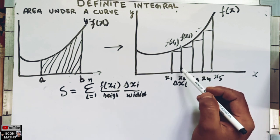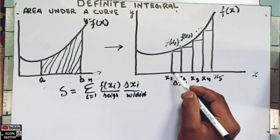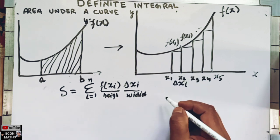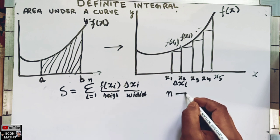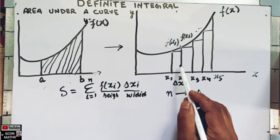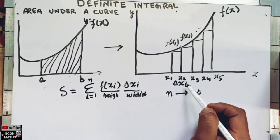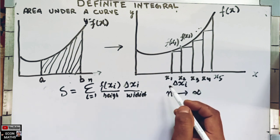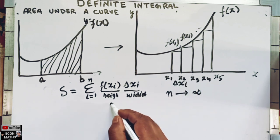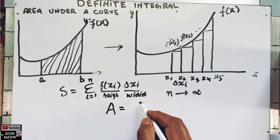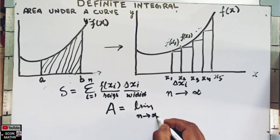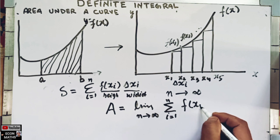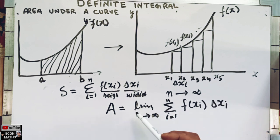The combined area of these rectangles will approach the actual area under the curve if we increase the number of sub-intervals. As n increases, Δxᵢ will get smaller and smaller. If n is increased to infinity — if there are infinite rectangles — the width of each rectangle will get smaller and smaller. So the area under the curve can be expressed as the limit as n tends to infinity of the summation from i = 1 to n of f(xᵢ)·Δxᵢ.